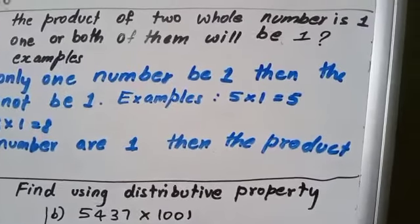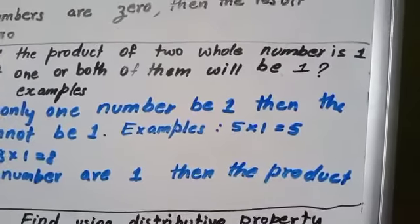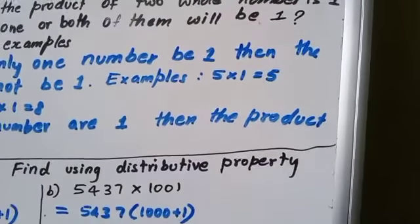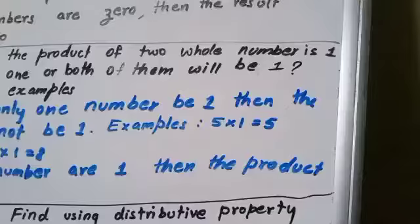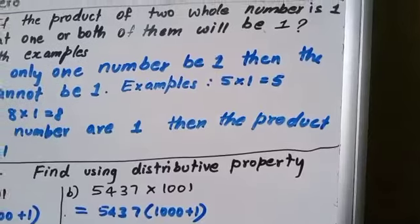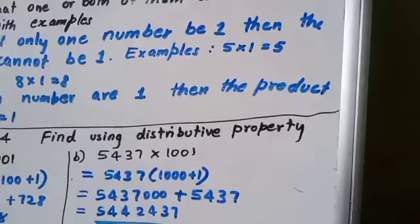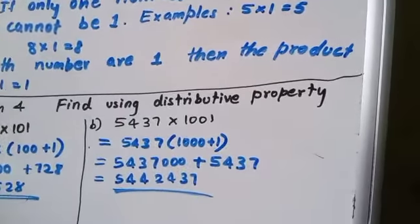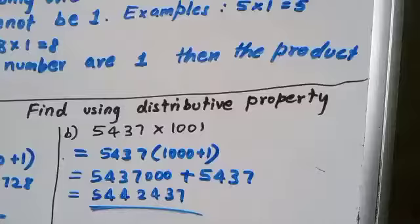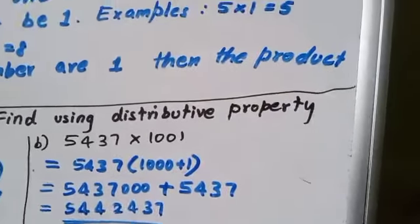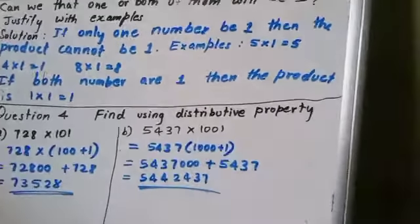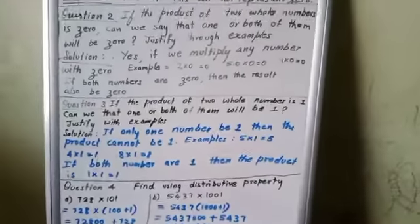Now the second question: 5,437×2001. If we have to multiply, then we have to use the distributive law. How can we distribute? This 2001 can be split 2000+1, so it is easily multiplication. So 54,37,000+5,437, you will be getting 54,42,437. Without wasting much time, easily we can multiply if the 0s are there. So that is the purpose we are using the distributive property.